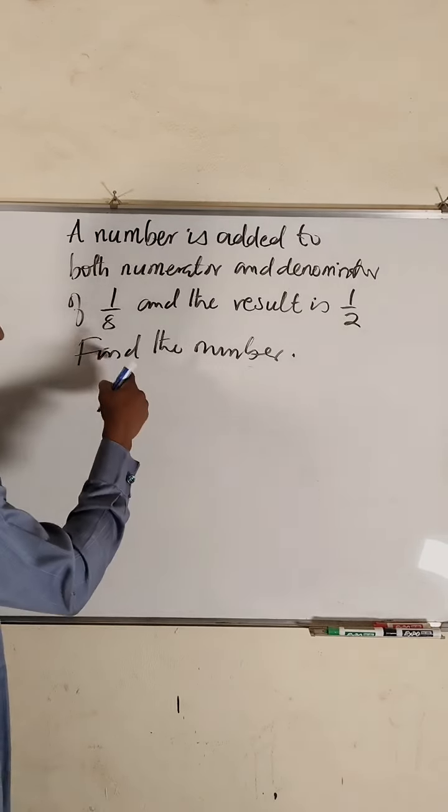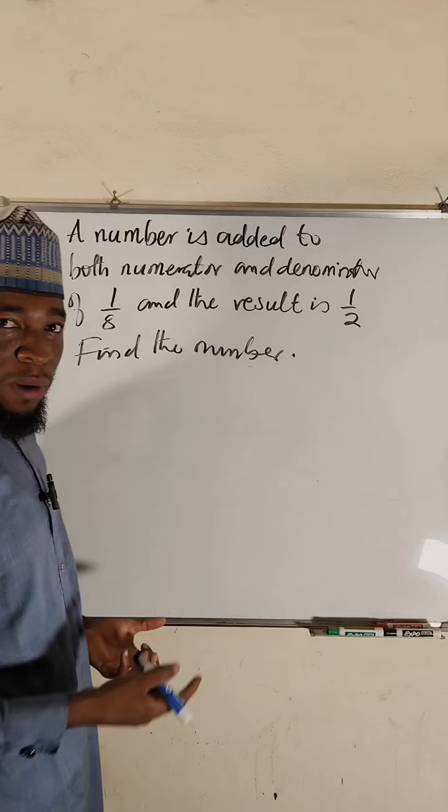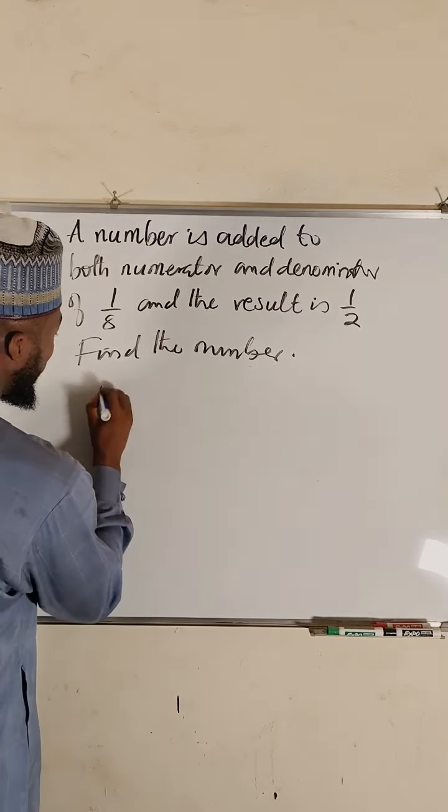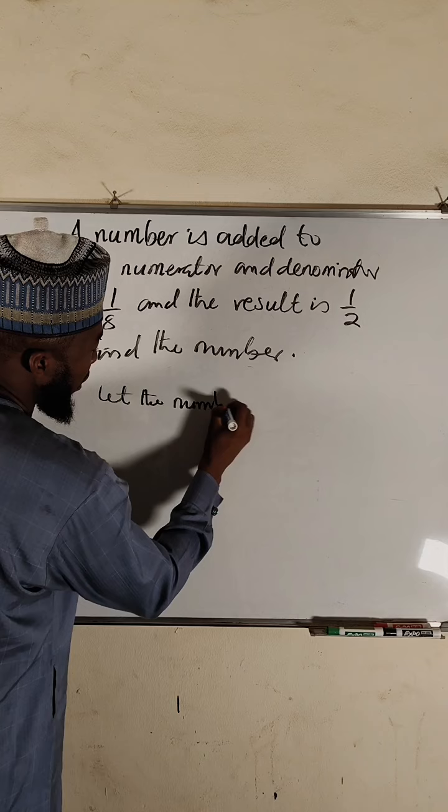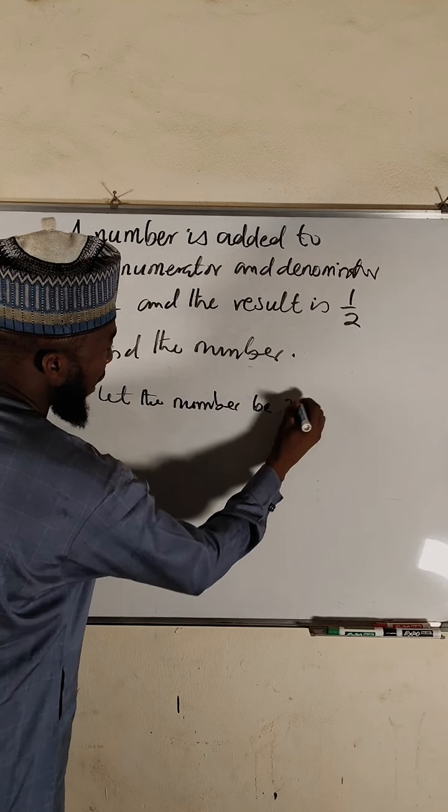We're asked to find that number added. Our fraction is one over eight. So let that number added be x.